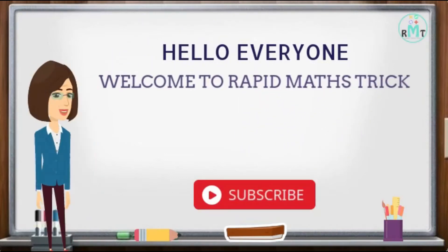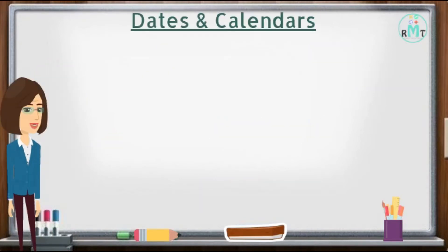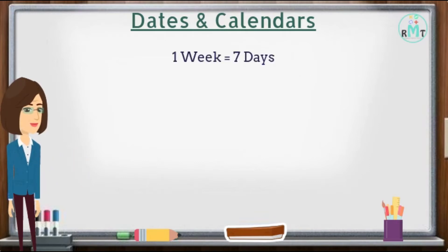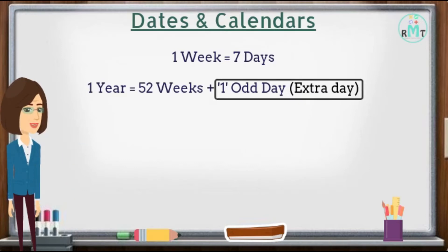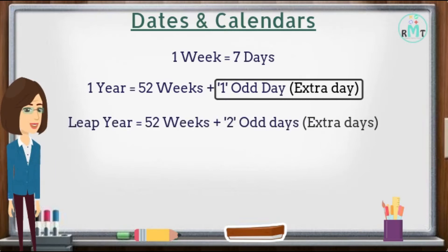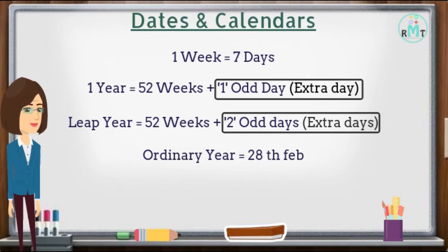Hello everyone, welcome to Rapid Math Tricks. Today we would learn dates and calendars. Before solving problems, we should understand the basic concepts of calendars. One week has seven days. One year has 52 weeks plus one odd day. In case of a leap year, we have 52 weeks plus two odd days. In an ordinary year, February has 28 days, but in a leap year, we have 29 days in February.